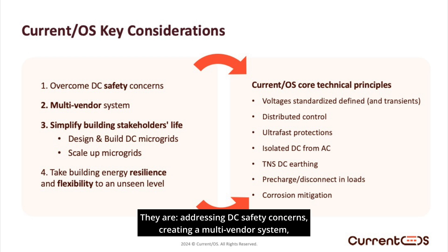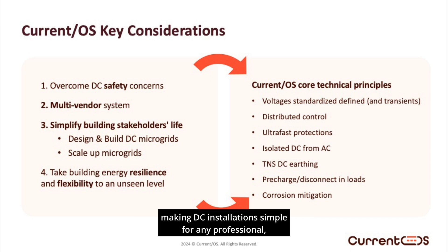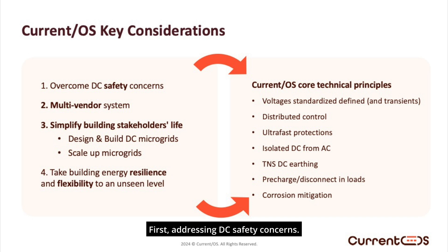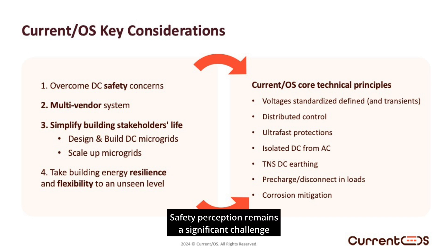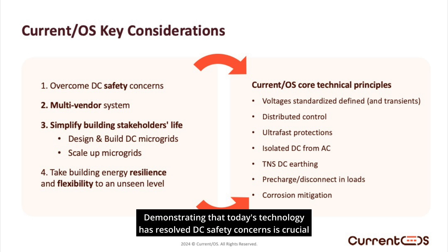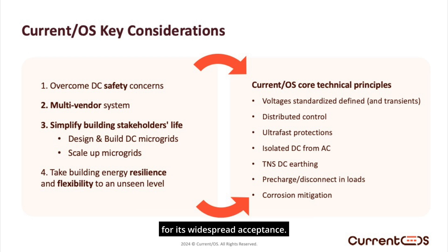There are four key considerations underlying all of Current OS's technical decisions. They are: addressing DC safety concerns, creating a multi-vendor system, making DC installations simple for any professional, and taking building energy resilience to unseen levels. Safety perception remains a significant challenge with direct current, as many electricians are cautious about adopting it.